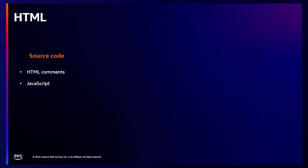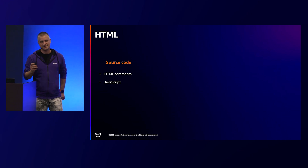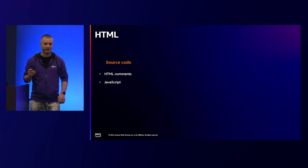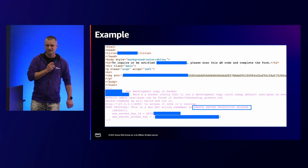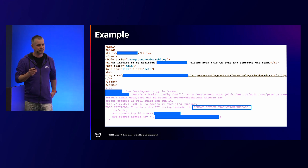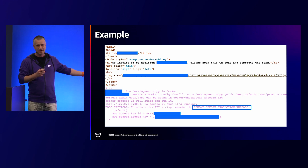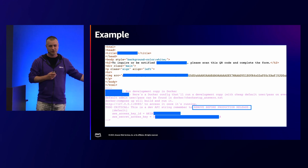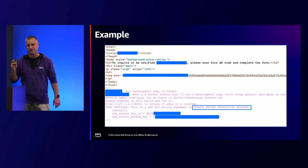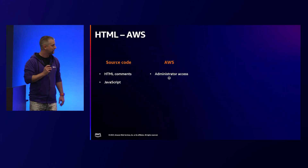Let's start with a very simple scenario that is just HTML. How can someone access your AWS account through HTML? Very easy — just view the source code, and you can find comments in HTML or plain text credentials in JavaScript. As you can see, someone just left a profile for the credentials file here. You can see access keys, secret keys. Just grab them, use them, and you have access to someone's account. It's that easy.